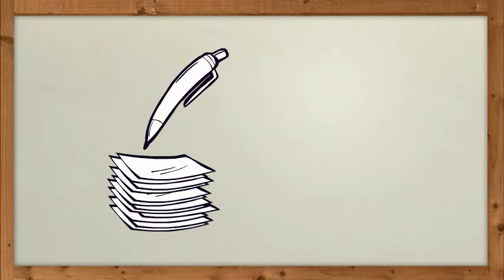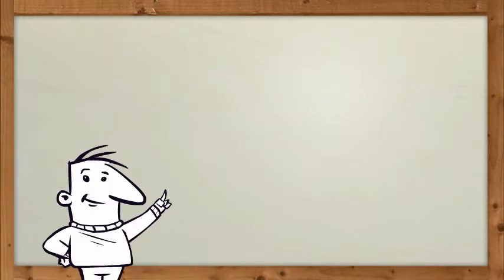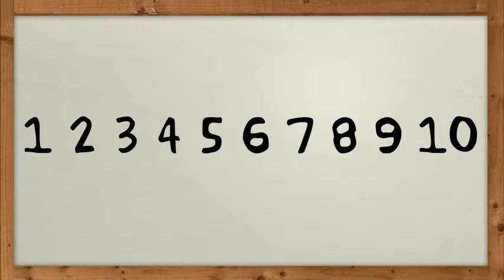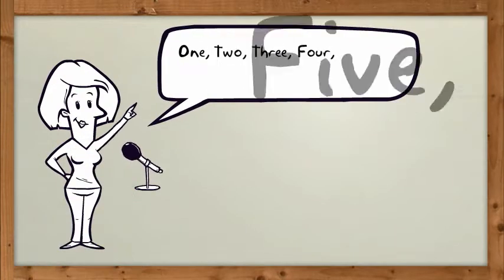Okay, so step one: I want you to write these numbers down on a piece of paper. Write the numbers one through ten, and while you're writing them I want you to say them out loud. So go ahead and do that.